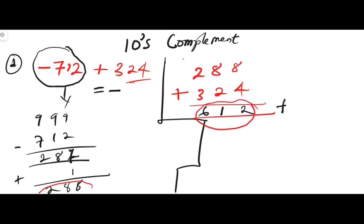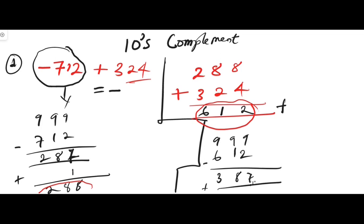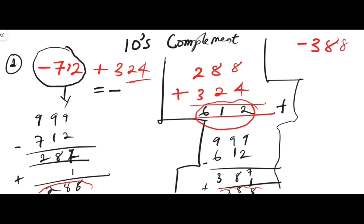To find the ten's complement of 612: 999 minus 612 gives nine minus two is seven, nine minus one is eight, nine minus six is three — that's 387. Adding one gives 388. So this is the ten's complement of 612, and the final answer is negative 388.